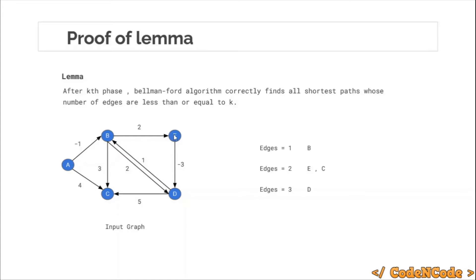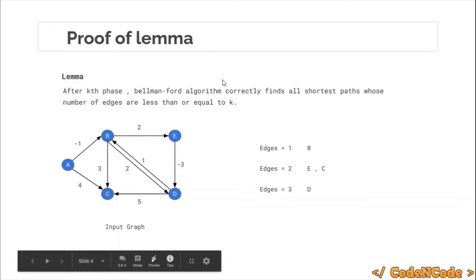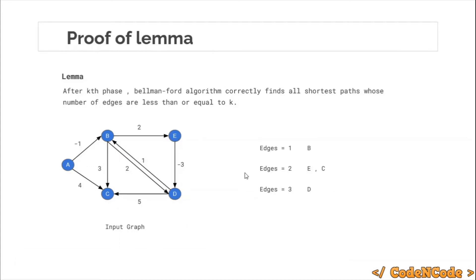For D, the shortest path contains three edges. So what this lemma says is that after k phases — for example, if k equals 2 — Bellman-Ford after two phases correctly finds the distance of all nodes which have less than or equal to 2 edges in their shortest path. So node B and nodes C and E (having at most 2 edges in their shortest path) would have their correct distances found by Bellman-Ford after two phases. This is what the lemma says.